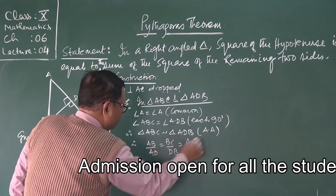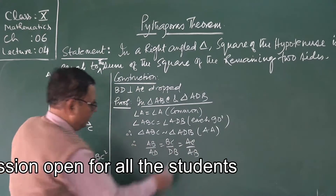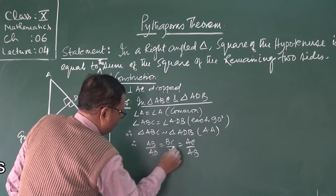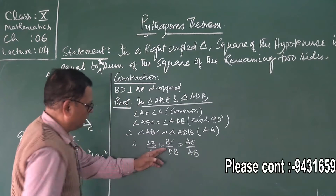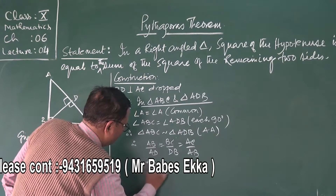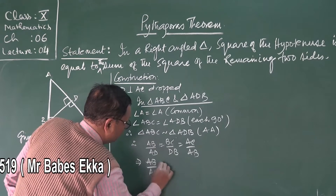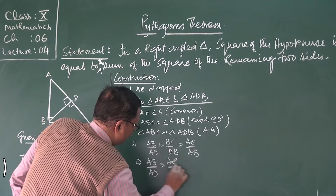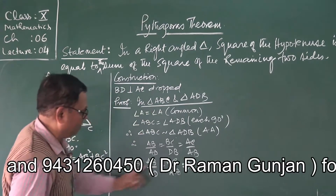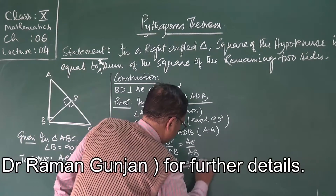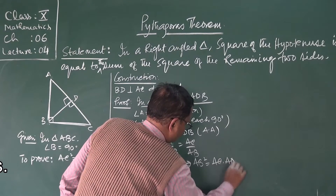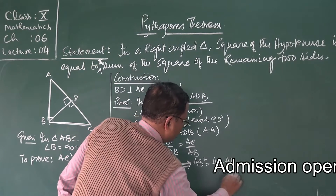Taking the first and last ratios: AB by AD is equal to AC by AB. On cross multiplication we get AB square is equal to AC into AD. Call this equation number 1.